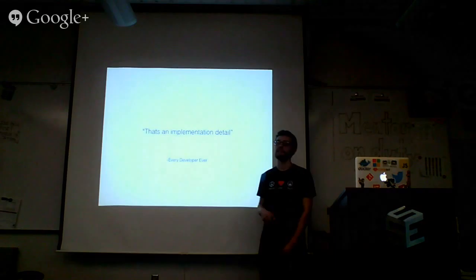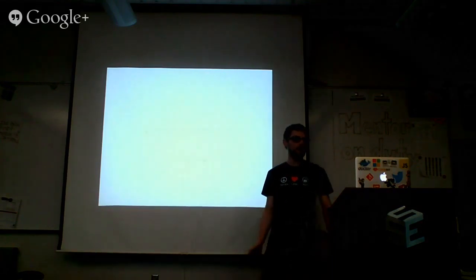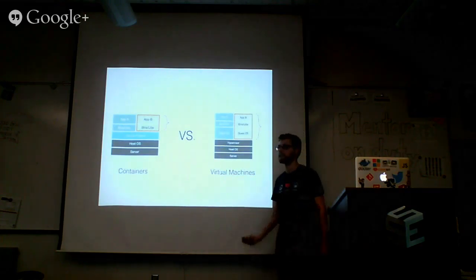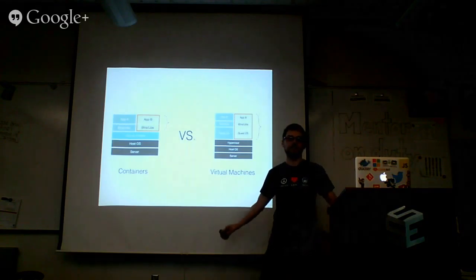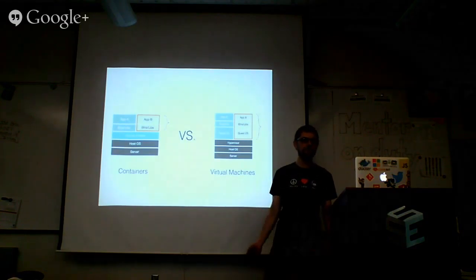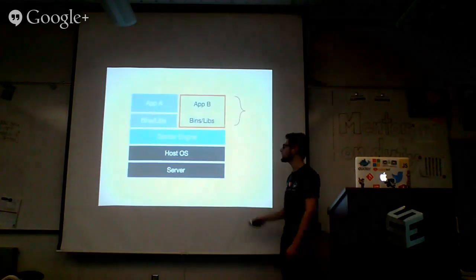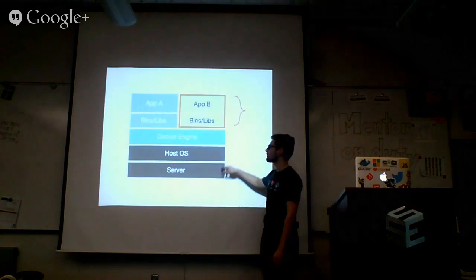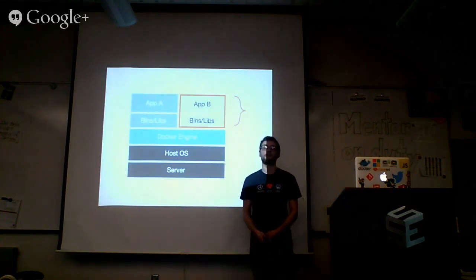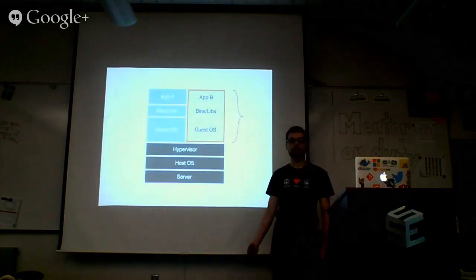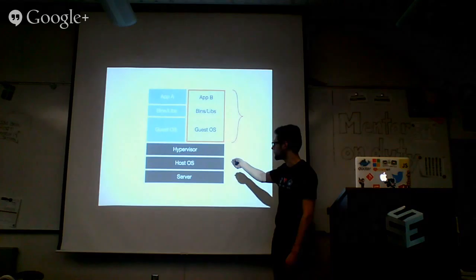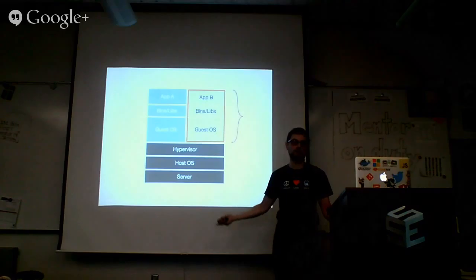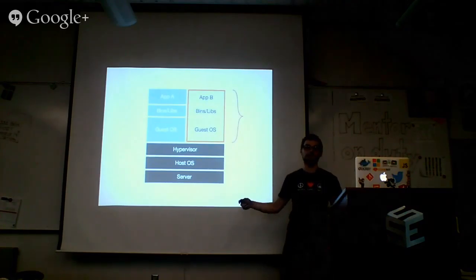So how does Docker work and what makes it so awesome? It comes down to containers versus virtual machines. You all know what a virtual machine is — it's basically a machine that is virtualized in the cloud. A container is a bit simpler than a virtual machine. It is literally just your app and its binaries and libraries, running on top of the Docker engine running on top of the host OS.